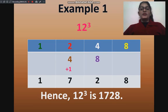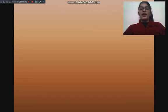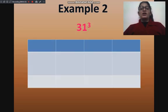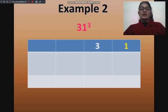Now let's take another example that ends with 1. Our next example is 31 cube. For that, we will start from the right-hand side. First, we will write 1, then 3, then 3 square that is 9, then 3 cube that is 27.